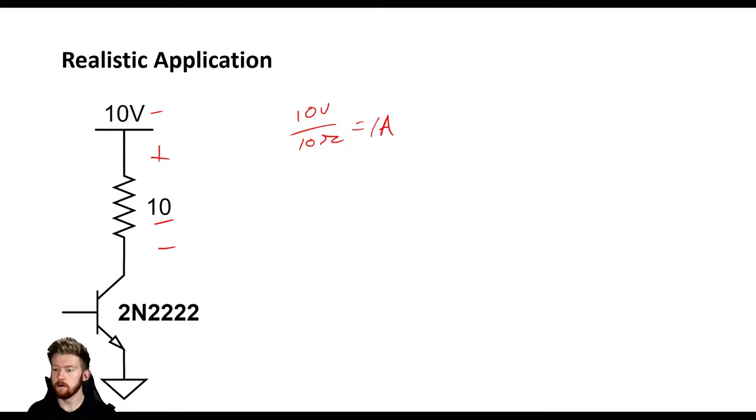So we know the amount of current that we need through our collector. Now if we know that we need 1 amp through our collector, we also know that the collector current is equal to beta times our base current. So if we know our beta and we know our collector current, we can use this to calculate the base current that we need in order to actually drive this load.